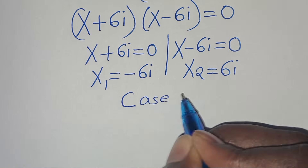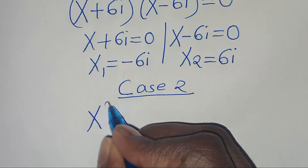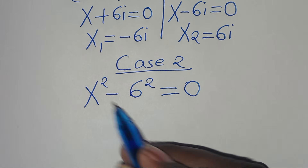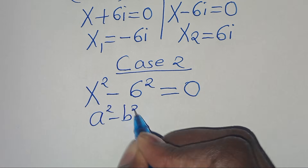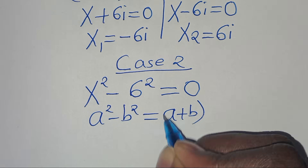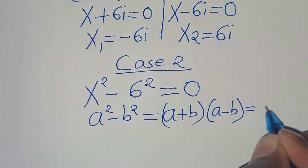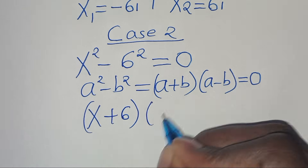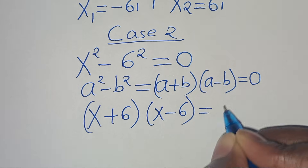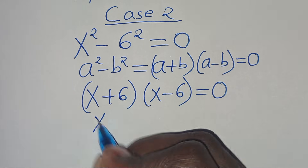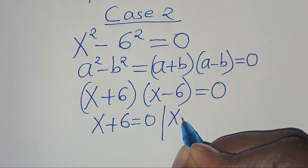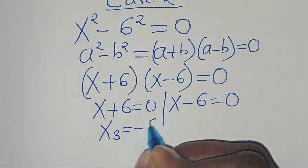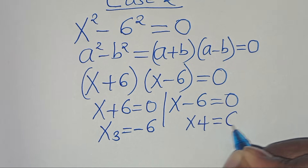Let's proceed to Case 2. We have x to the power of 2 minus 6 to the power of 2 equals 0. This equation is of the form a squared minus b squared, which we can express as a plus b multiplied by a minus b, equals 0. So here we have x plus 6 multiplied by x minus 6 equals 0. Therefore x plus 6 equals 0 giving x₃ equals negative 6, and x minus 6 equals 0 giving x₄ equals 6.